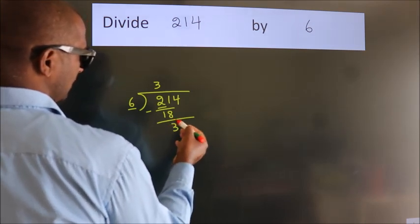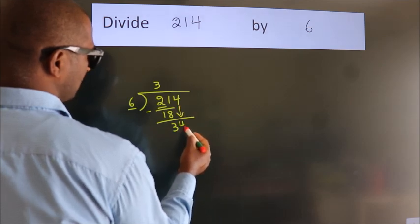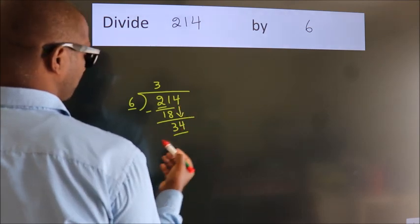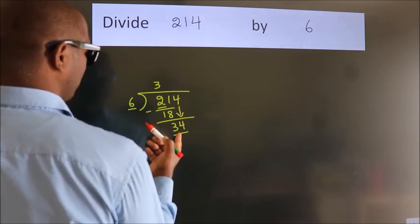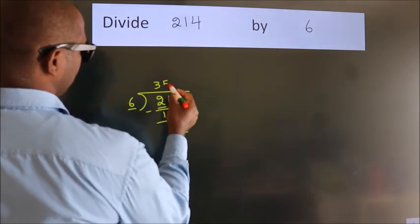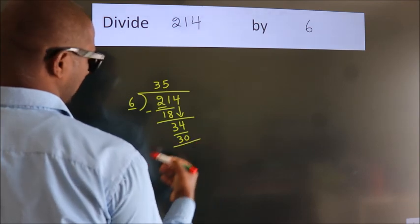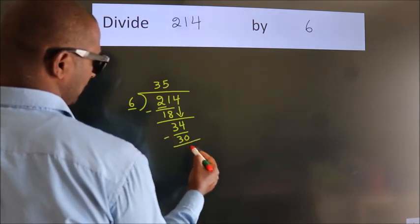After this, bring down the beside number. So 4 down, so 34. A number close to 34 in the 6 table is 6 fives 30. Now we subtract. We get 4.